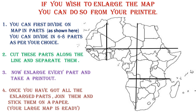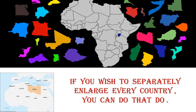In case you want to enlarge the map, draw lines across it like a grid, separate each part and enlarge one part at a time, then take a printout. When all the enlarged parts are done, reassemble them by sticking them on a chart paper or any other thick paper you have at home — your large political map of Africa is ready! Remember, it is entirely your choice whether you want to enlarge it or not.